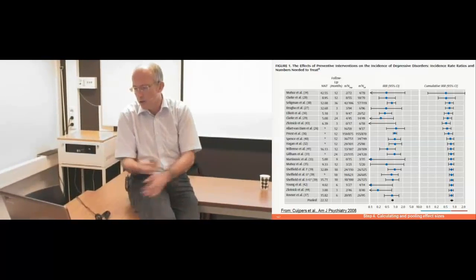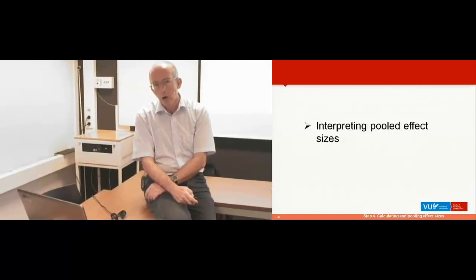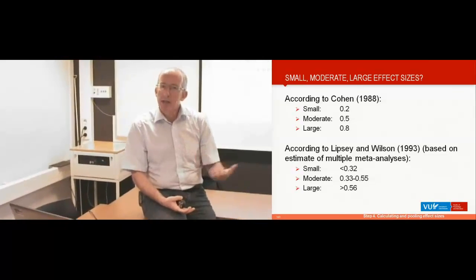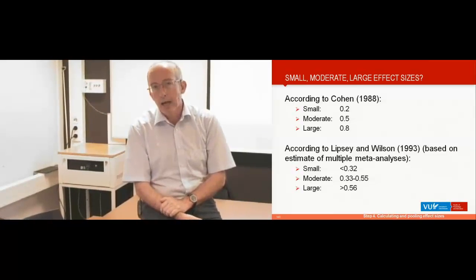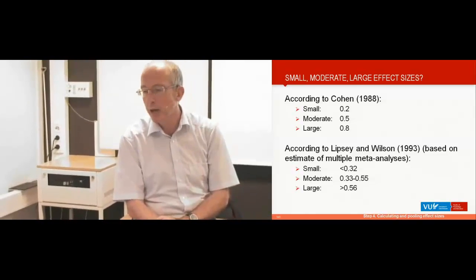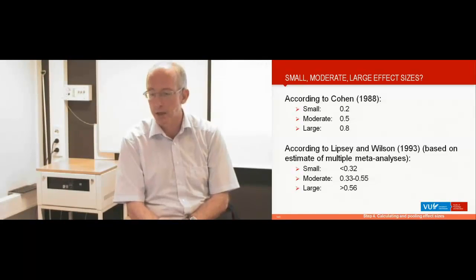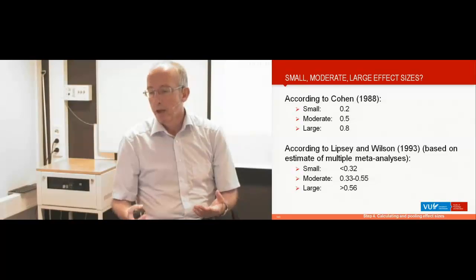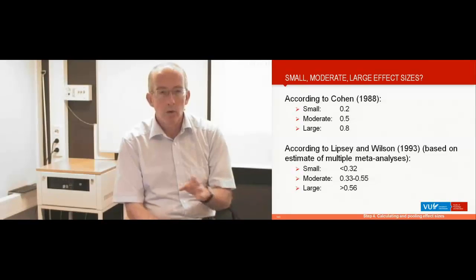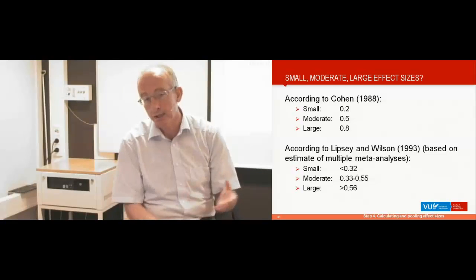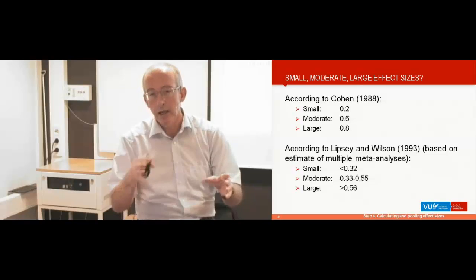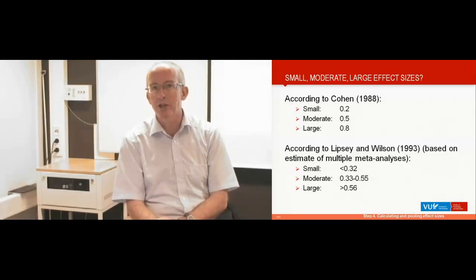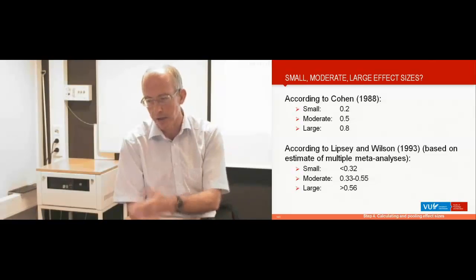How should you interpret the pooled effect size? When Cohen developed Cohen's D — the standardized mean difference — he made a rough estimate of what is small, moderate, and large: an effect size of 0.2 is small, 0.5 is moderate, and 0.8 is large. That is not based on empirical data. A few years later, Lipsey and Wilson — by that time there were already several hundreds of meta-analyses — took all those meta-analyses together and looked at how large these effects actually are, providing a more data-based indication of what large, moderate, and small mean.